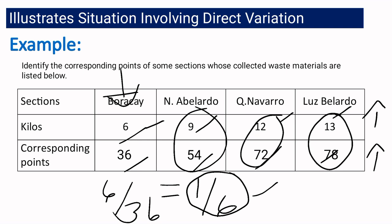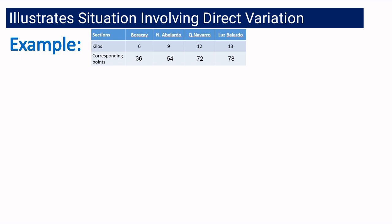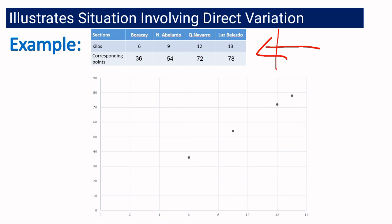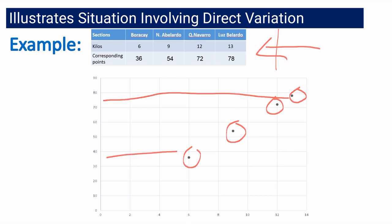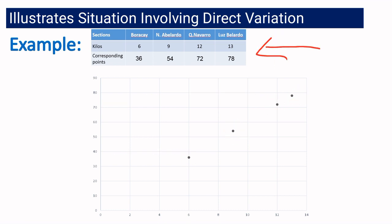That is why we can say the situation really illustrates direct variation: it produces a constant ratio, and as one quantity increases, the other quantity also increases. Another characteristic of a direct variation is its graph. Considering our table earlier, if we graph it — with 6 kilos at 36 points, 9 kilos, 12 kilos, and 13 kilos at 78 points — you will notice that the graph is a straight line. So another characteristic of direct variation is that the graph of the two quantities is a straight line.